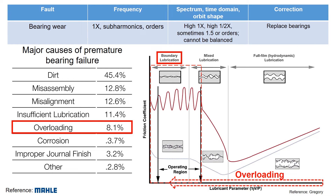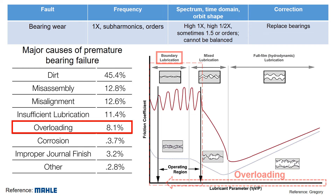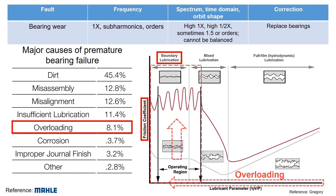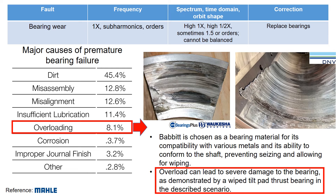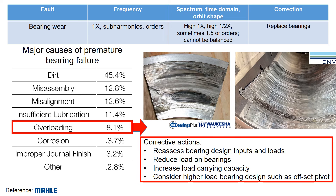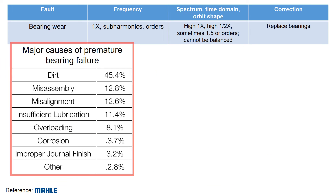Now let's discuss the bearing wear due to overloading. Hydrodynamic bearings rely on a thin lubrication film. An overload can lead to contact between rotating and stationary components, which results in temperature increases and potential melting. Here are photos of bearing damage due to overloading — overload can lead to severe damage to the bearing as you could see from these photos. Corrective actions involve reassessing the design inputs and loads, reducing the loads, and considering higher load bearing designs.